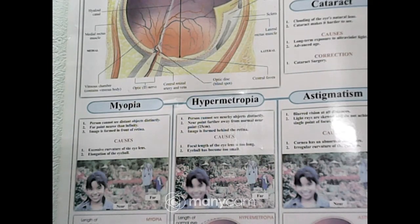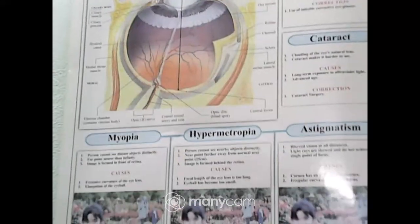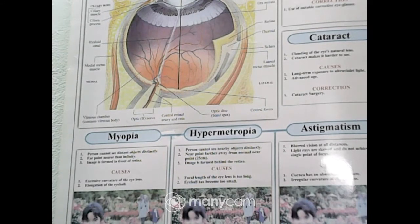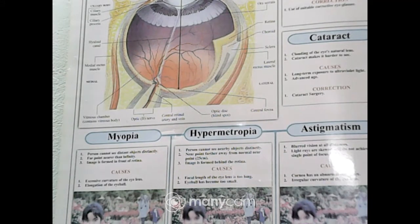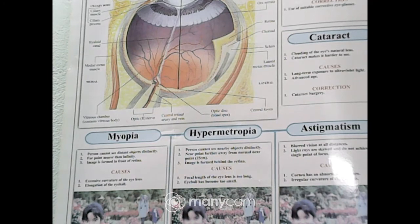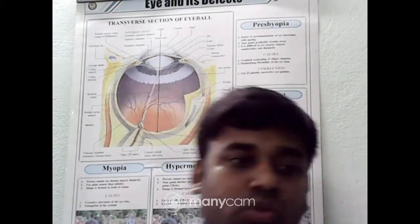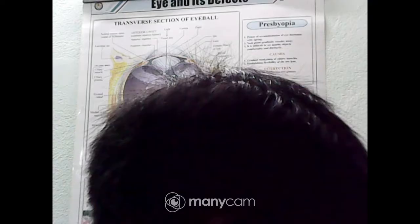The far point of the eye is infinity and the near point of the eye is 25 centimeters. So students, today I have discussed the eye portion of your syllabus. Next day I will start another chapter. Thank you, students. Bye.